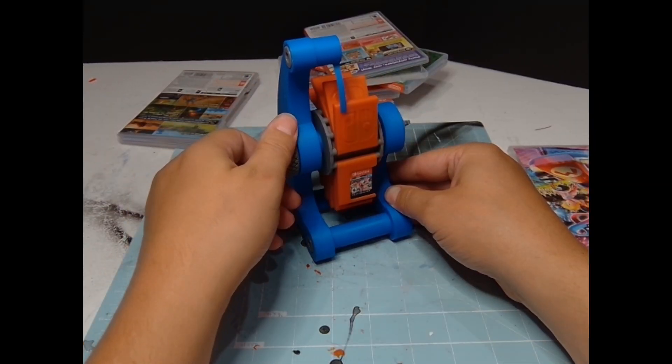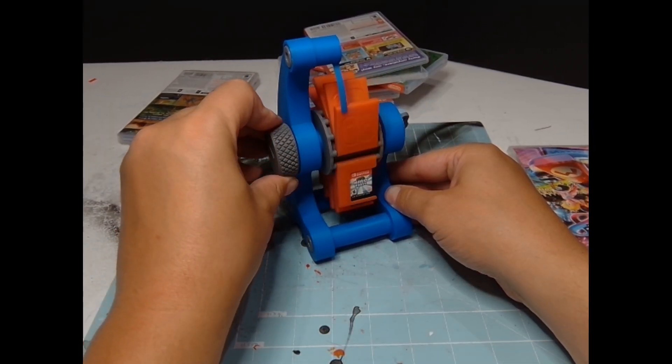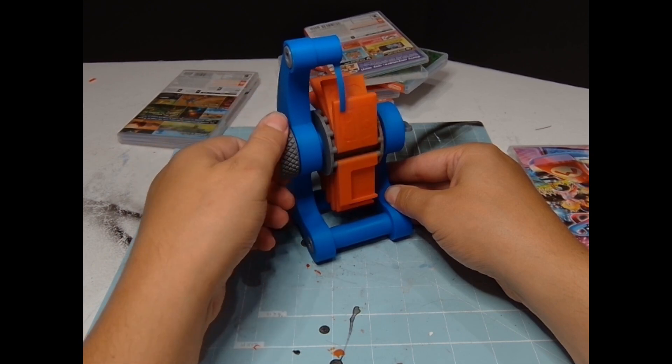This mechanical device is a fully 3D printed Nintendo Switch cartridge Rolodex. In this video I'm going to show you how to build it. Let's go.